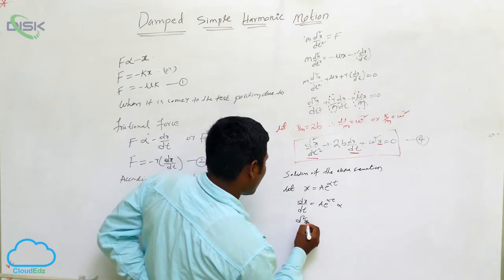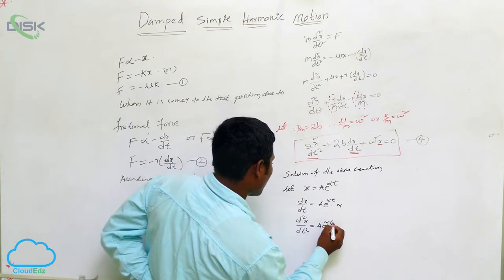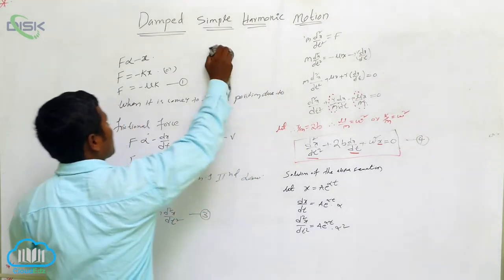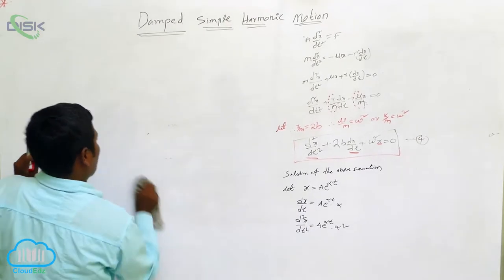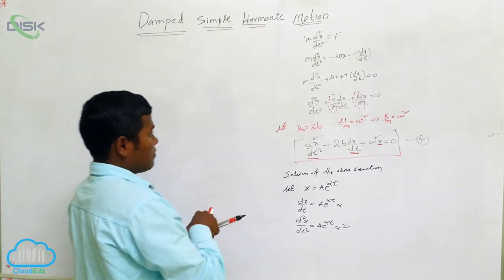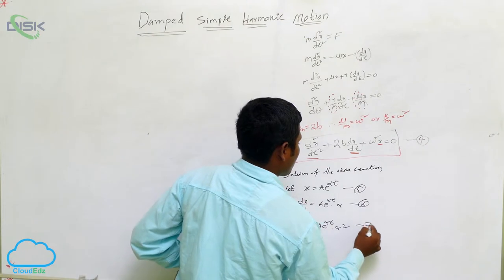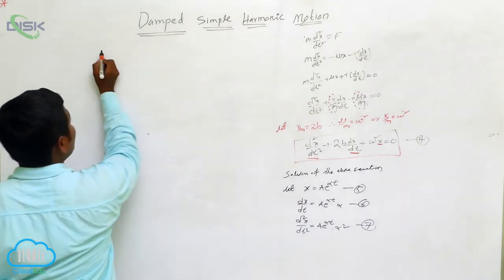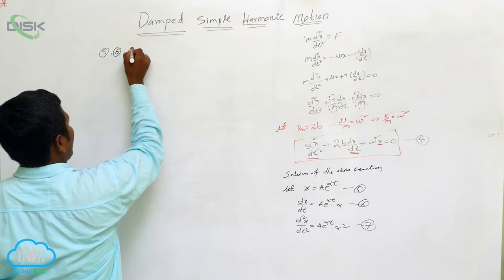In that case, d²x/dt² is equal to A·e^(αt)·α². Now we substitute equations for x, dx/dt, and d²x/dt² into equation number four.